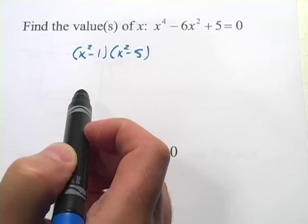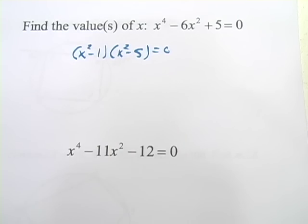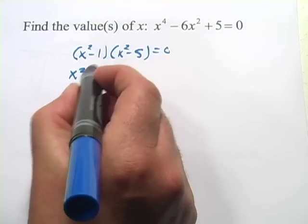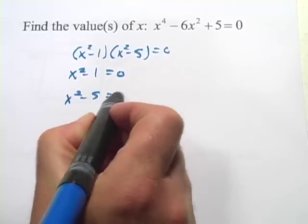Now we've got two quadratic factors. We can set each of those equal to 0 because, remember, this whole thing equals 0. So I have x squared minus 1 equals 0, and I have x squared minus 5 equals 0.